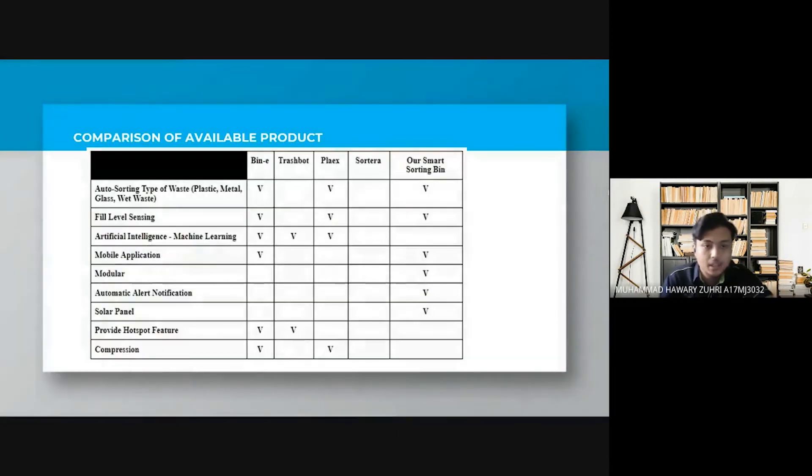This is a comparison of available product with our product. We can see here the Sortera cannot auto-sort the type of waste and also the TrashBot. For fill level sensing, it's only available in BinE, Blabox and our smart sorting bin.